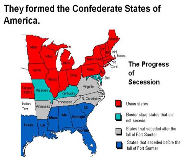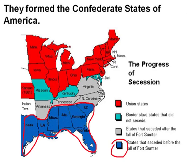They formed the Confederate States of America. If you look at this map, you see the progress of secession — the progress in which the southern states left the United States. The states here in blue left right after Abraham Lincoln was elected president. The ones represented in gray didn't leave until after the start of the Civil War.